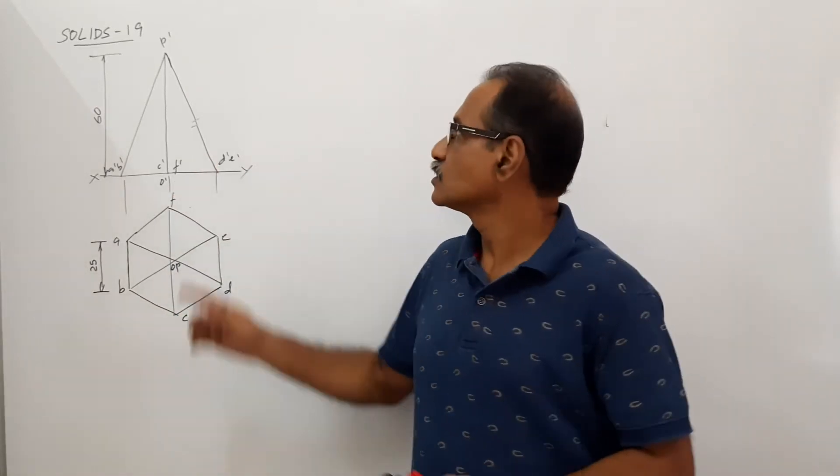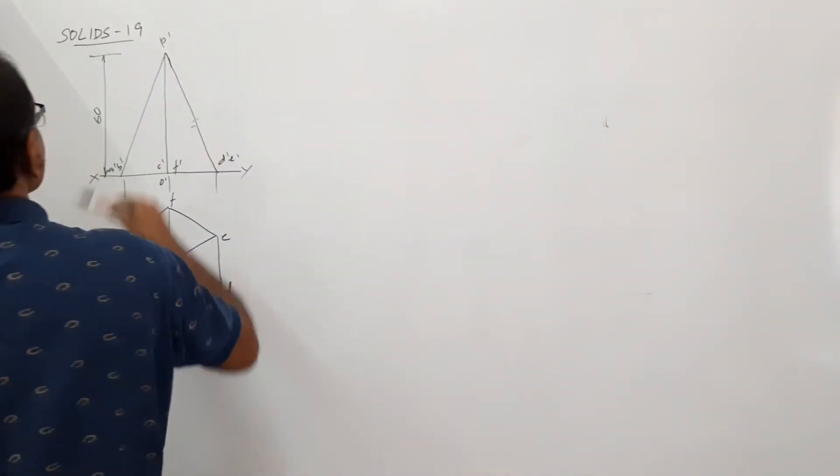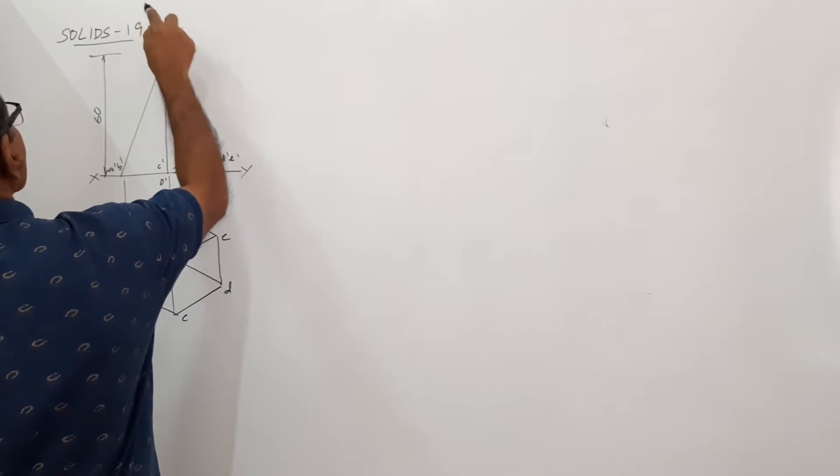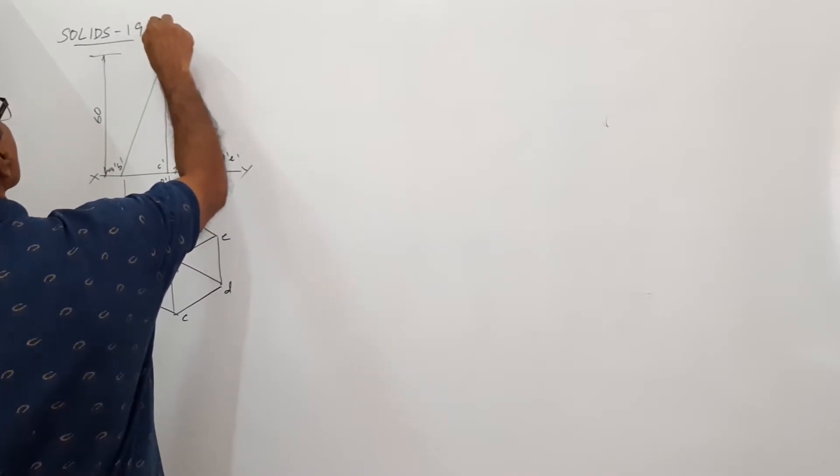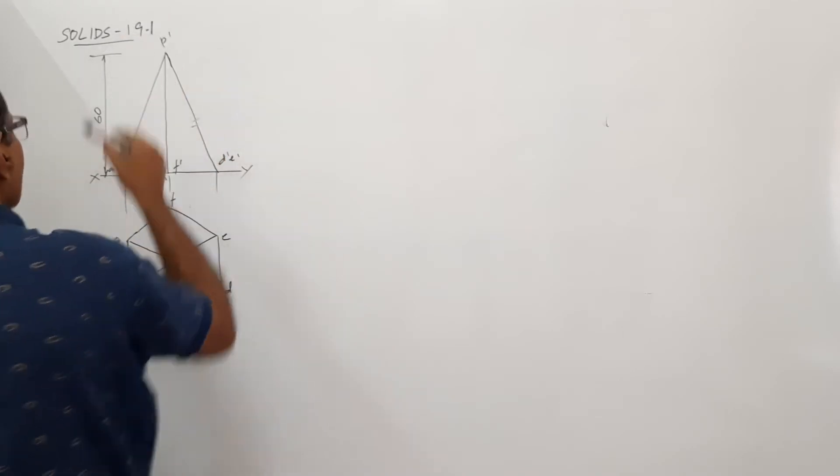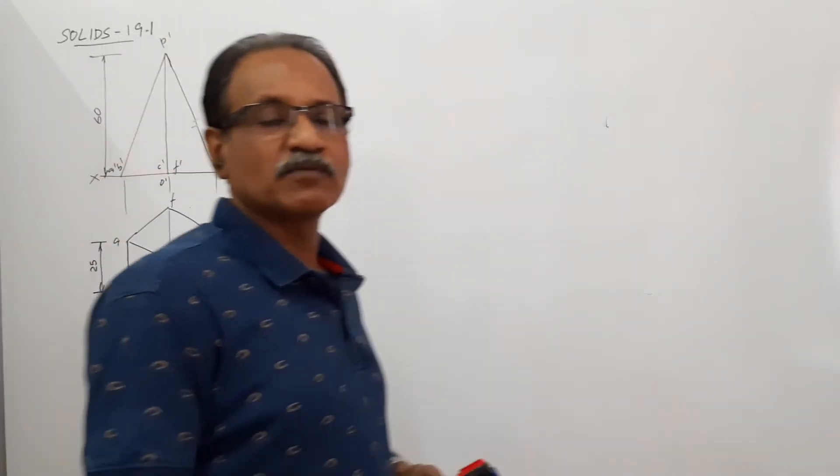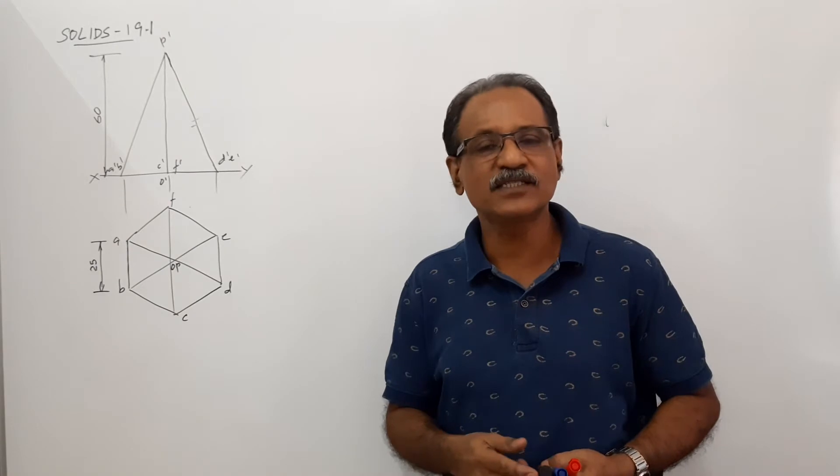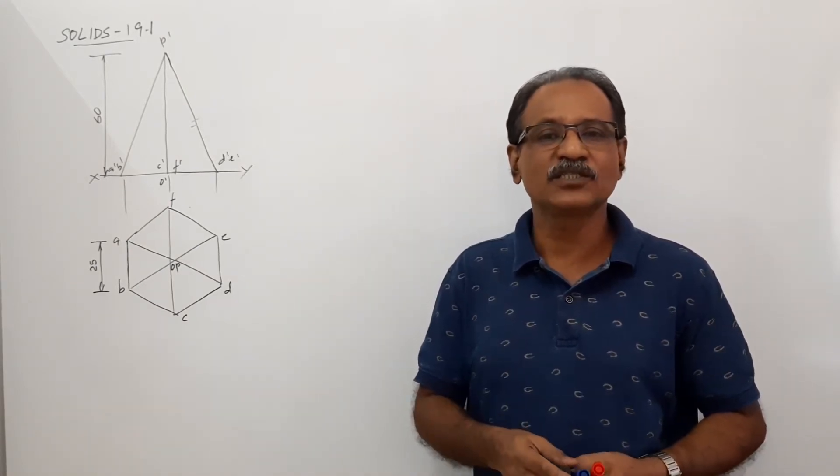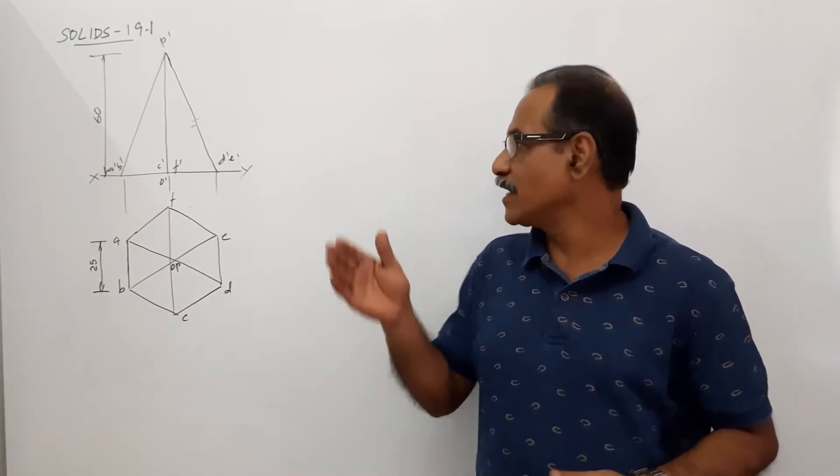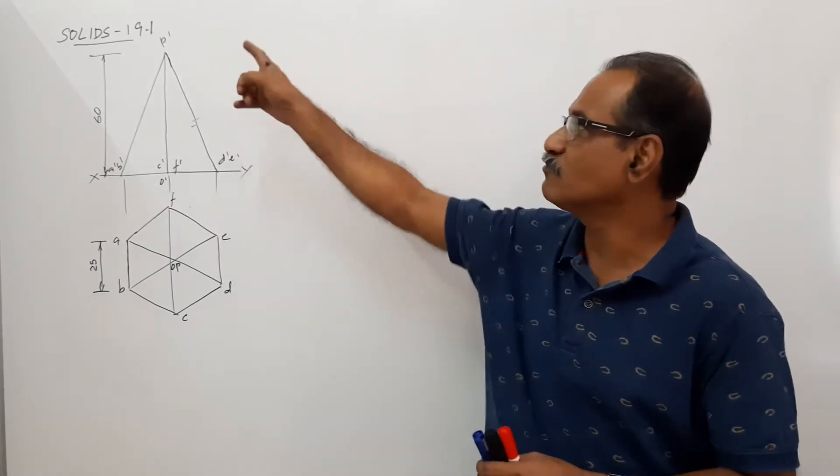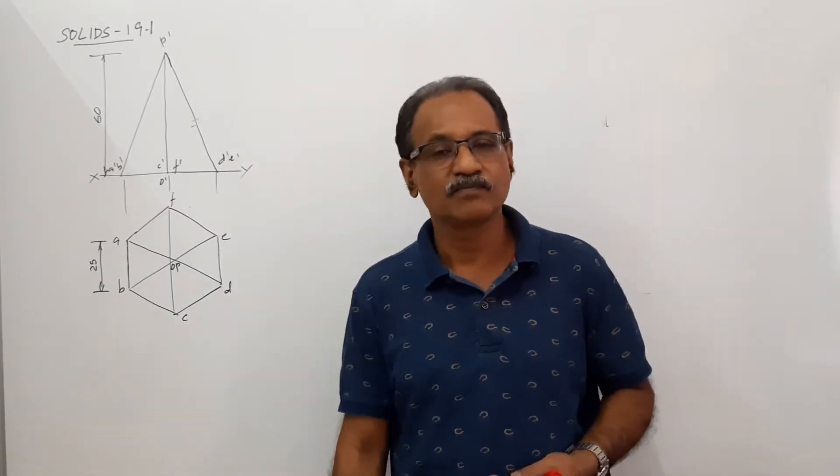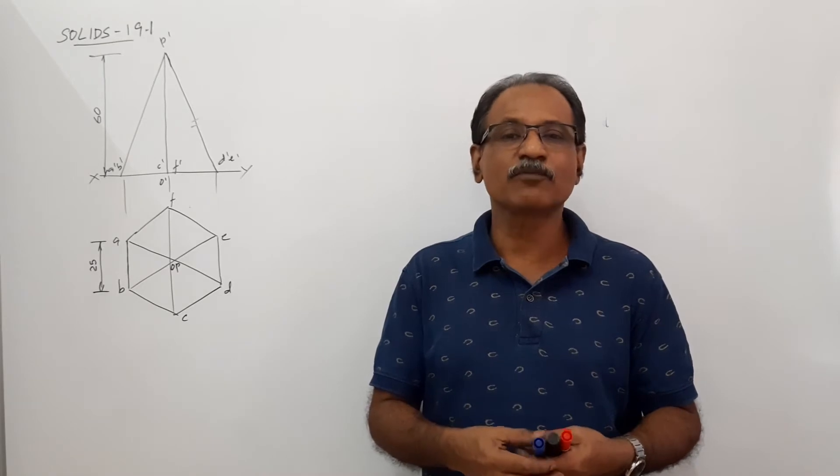Hi students, video 91, hexagonal pyramid, 25mm side, 60mm axis, rest on HP on an edge of base with the triangular face containing this edge parallel to VP and 20mm in front of VP. The same question which you have done in 19, we are going to do it by auxiliary projection method.